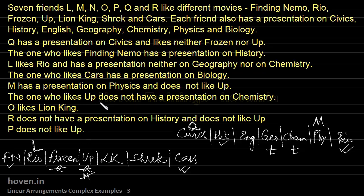The one who likes Up doesn't have a presentation on Chemistry. So whoever is allocated to Up cannot be allocated to Chemistry. We will come back to this condition later.